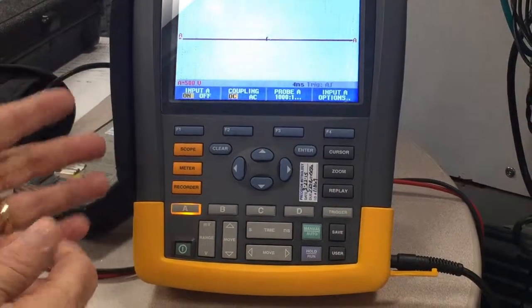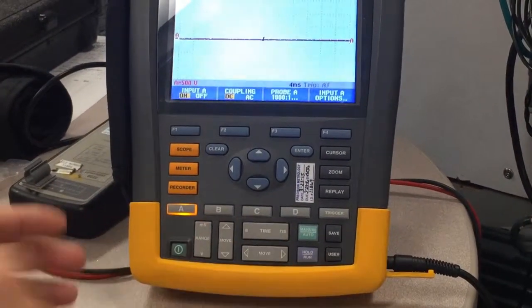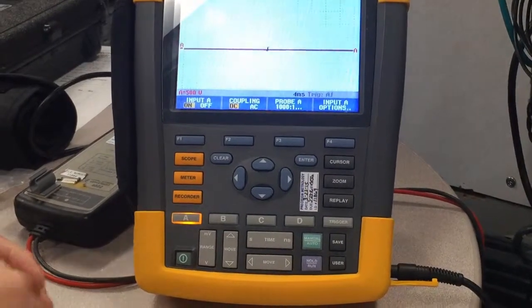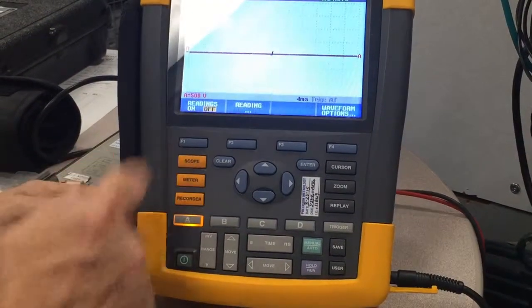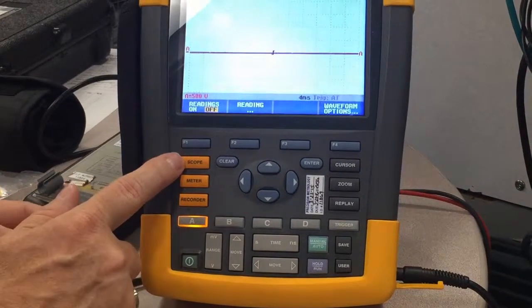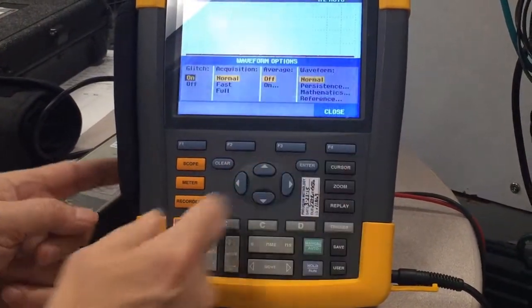So, now I have my voltage attenuation set. I have my times per division set. The next thing we're going to set up is some scope options. So, press the Scope button. Press the Waveform Options.